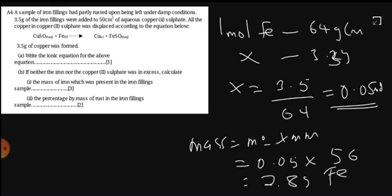Now what they want is the mass of rust which was present in the iron filings. Remember that the iron filings had 3.5 grams which were added to aqueous copper(II) sulfate. So we need to remove this from the 3.5. So 3.5 minus 2.8, that will give you 0.7 grams of rust. That's how we're supposed to work it out.